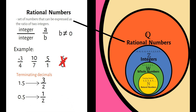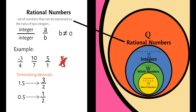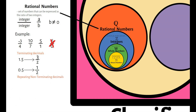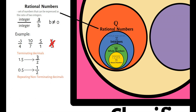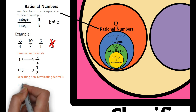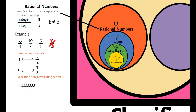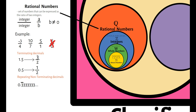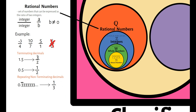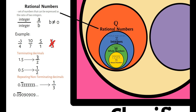Aside from terminating decimals, makukonsider din natin na rational numbers ang mga repeating, non-terminating decimals. These are decimals that continue endlessly at umuulit ang mga numbers. Example, 0.33333 and so on — merong isang digit na umuulit infinitely. Pwede natin i-convert ito into fraction as 1 over 3. Another example is 0.09090909 and so on — merong dalawang digits na umuulit infinitely. Pwede natin i-convert ito into fraction 1 over 11.